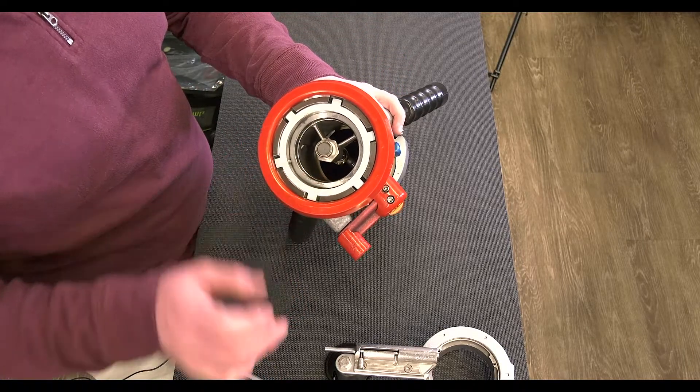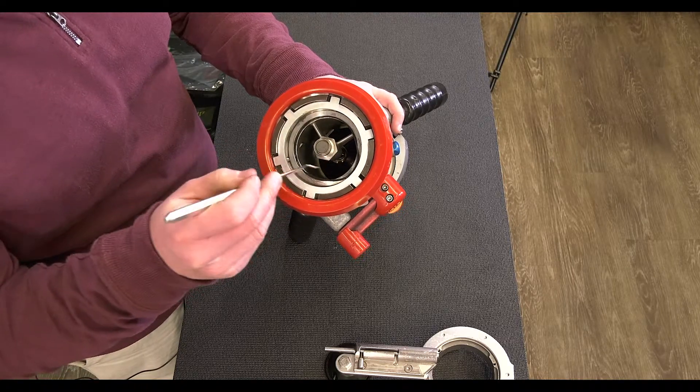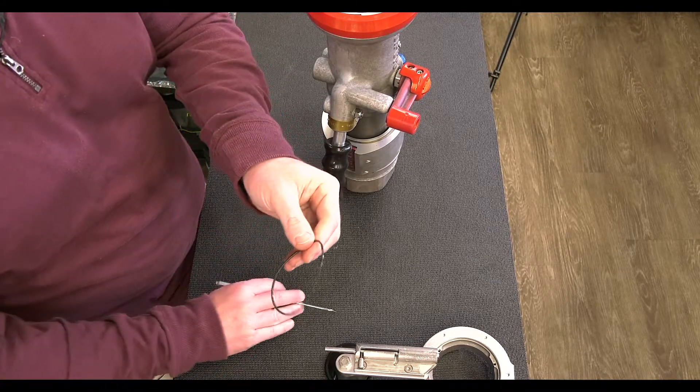After we remove the nose seal, we need to remove the o-ring. We can use a pick, pull that o-ring out so we can replace it.